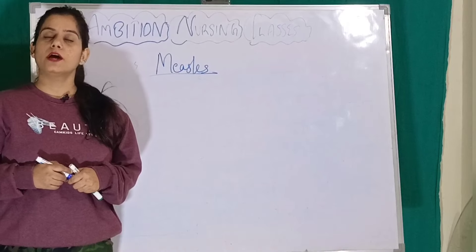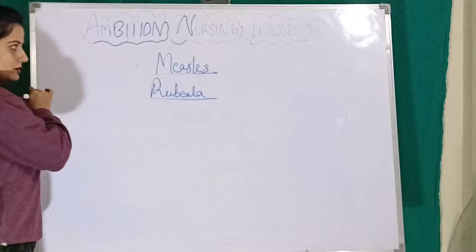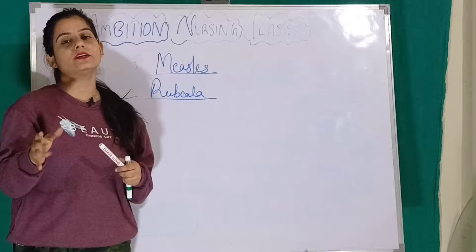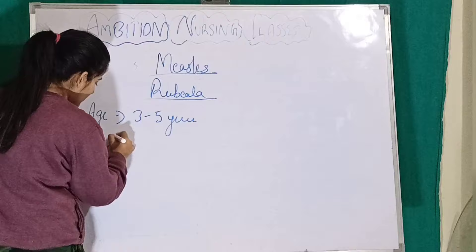Next disease condition is the measles, which we call rubella. It affects the 3 to 5 years age group, and the incubation period is 8 to 15 days.